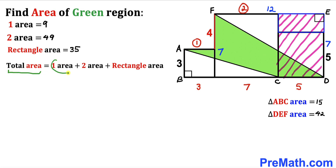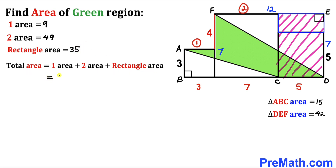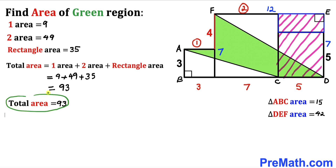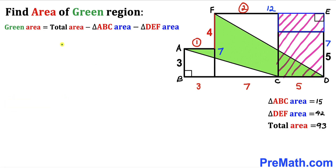Now we calculate the total area: box one is nine, box two is 49, and the rectangle is 35. Adding these together — nine plus 49 plus 35 — gives us a total area of 93 square units.